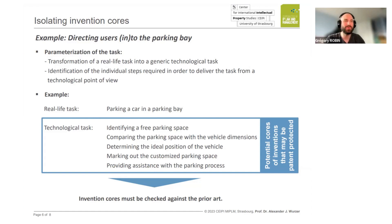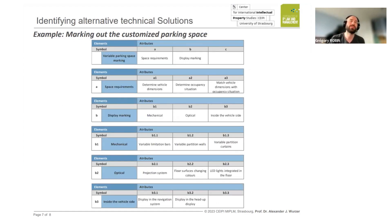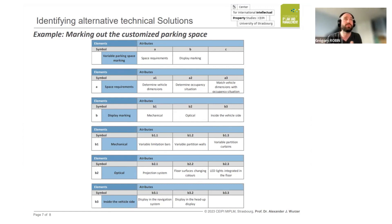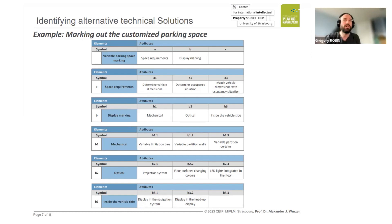We may focus on the fourth sub-task — marking out the customer's parking place — because on the next slide we will discuss the sub-sequences and check all alternatives for how we can accomplish this. We need to address the space requirements and display where the free parking place is. For space requirements, we need to determine the vehicle dimension, the duration in the parking bay, and whether everything matches so the car can park in any free space. For display marking, we can do it mechanically, optically, or inside the vehicle.